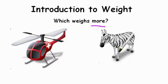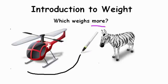Which object weighs more? Are we asking which object is heavier? Which object is lighter if we have more? You're right. It's which object is heavier. Now as a zebra is very heavy, but between a helicopter and a zebra, the helicopter weighs more.